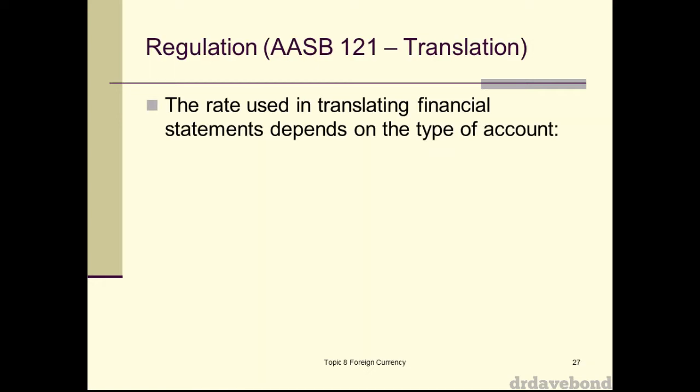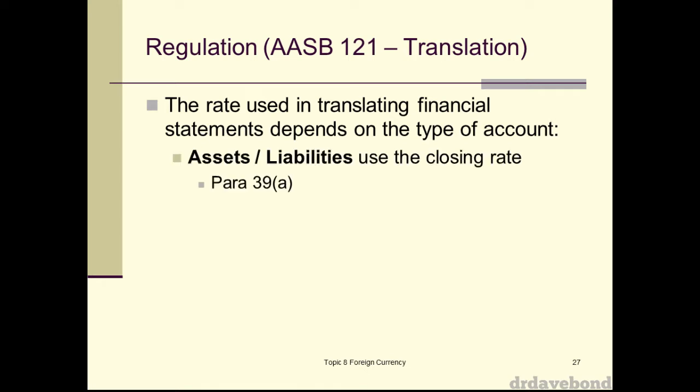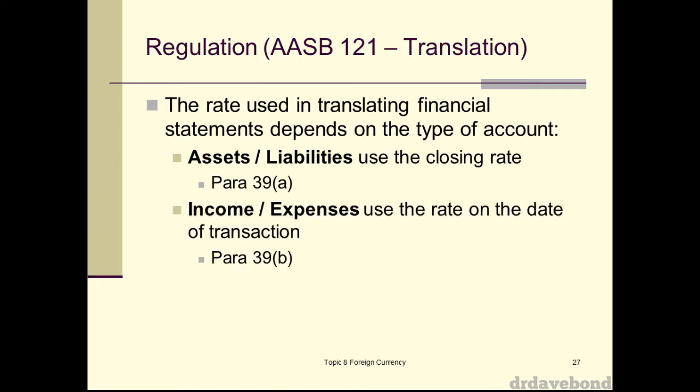The things we've got to do are: translate — basically convert at some sort of rate. For assets and liabilities we simply use the closing rate. So if it's a 30 June year-end financial statement, we look at whatever the exchange rate is at 30 June and convert all our assets and liabilities at that rate. For income or expenses — profit and loss items — we use the rate on the date of the transaction.